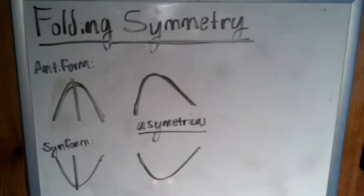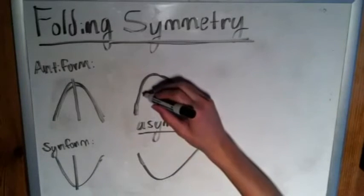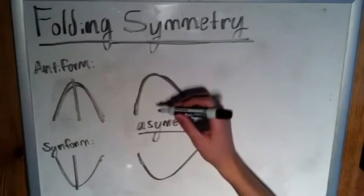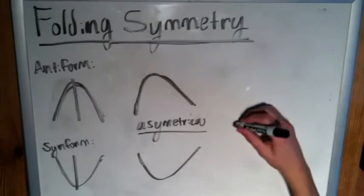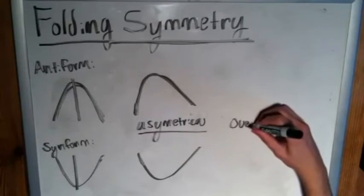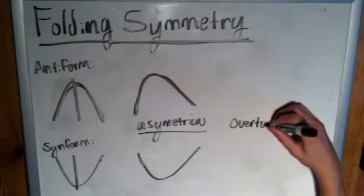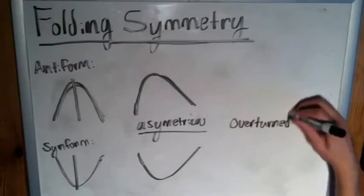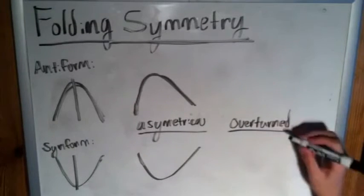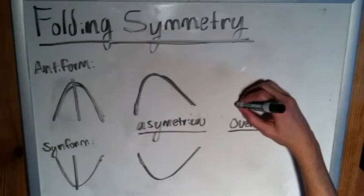Furthermore, if we have something where the difference in pressure is even greater, then we can have what's called an overturned synform or antiform, which would look something like this, where you've got one that has just...